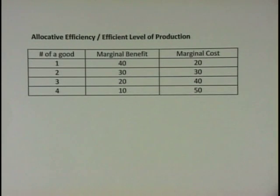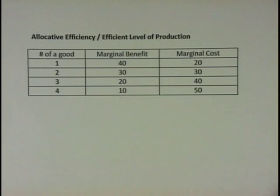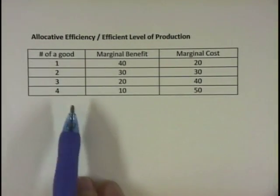For this video, we want to figure out what is the efficient level of production for a country or an economy. When we did the PPFs, we figured out if it was on the PPF, then it was productively efficient. Now we're looking for allocative efficiency, which is the efficient level of production for society. We don't want to just be on the PPF — we want to be at the right place on the PPF. So if we're given information like this...